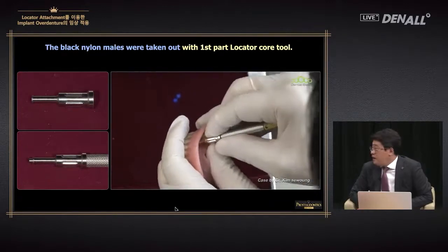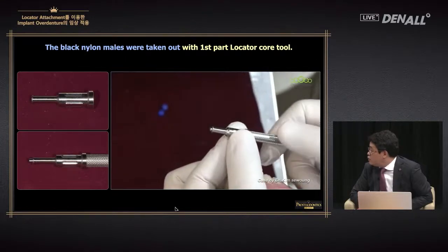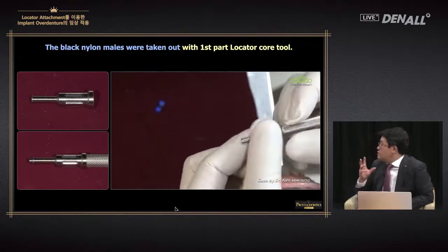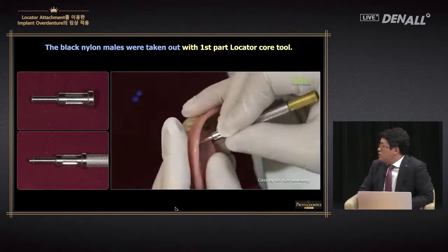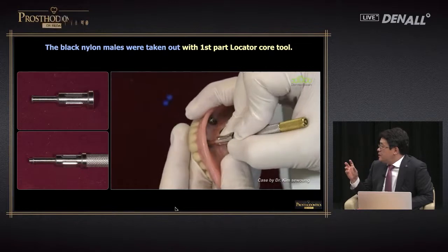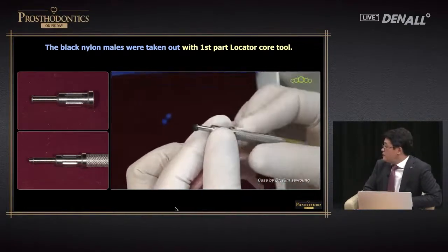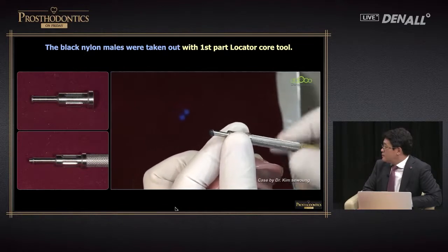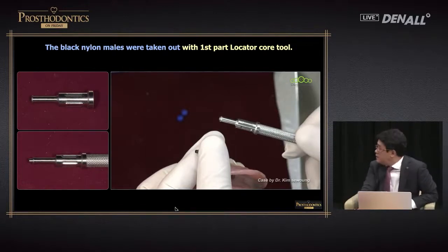The black nylon mill is now being removed. Using the middle piece of the locator core tool, you can remove it very easily. If it is stuck, you can remove it using the back portion as shown in the video. If you are fully aware of how to use the core tool, you can use it very easily.